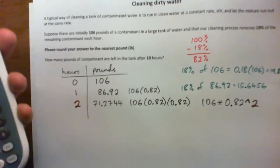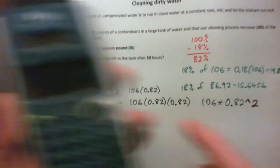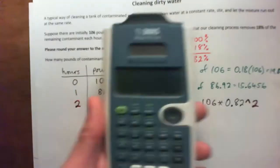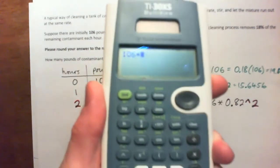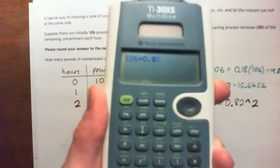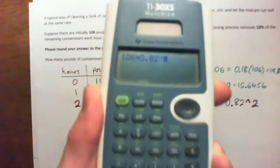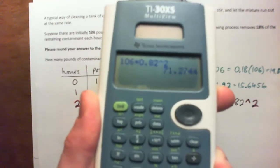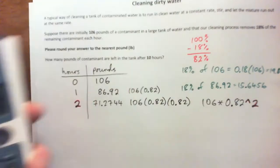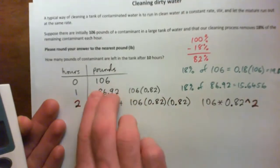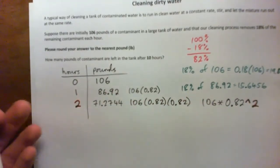Plug that in the calculator and you should get the 71 number there. So 106 times 0.82 to the power of two, and there we go, 71.2744. So we're getting 82% of it for the first hour, 82% again for the next hour, and so on.